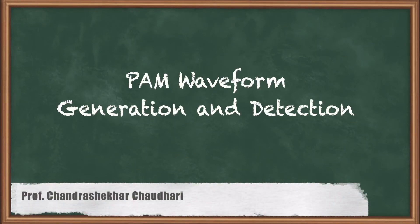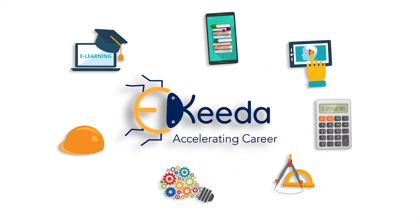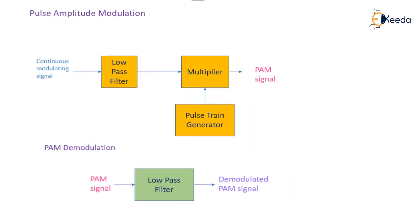Hello friends, now we will see the pulse amplitude modulation. Basically, the input to this pulse amplitude modulator is a continuous modulating signal which is changing with respect to time. It is coupled to the low pass filter, where the lower frequency components are allowed to pass and the higher frequency components are blocked.